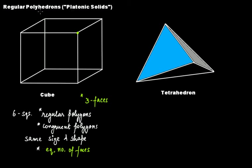The second name for a regular polyhedron is platonic solids. Here you have a tetrahedron. In a tetrahedron, you have four triangles. We know that the triangles have to be regular, which means they have to be equilateral triangles — four equilateral triangles. Since they have to be congruent, they are of the same size.